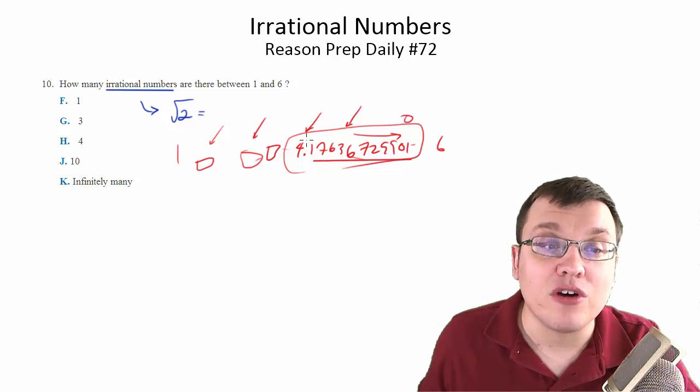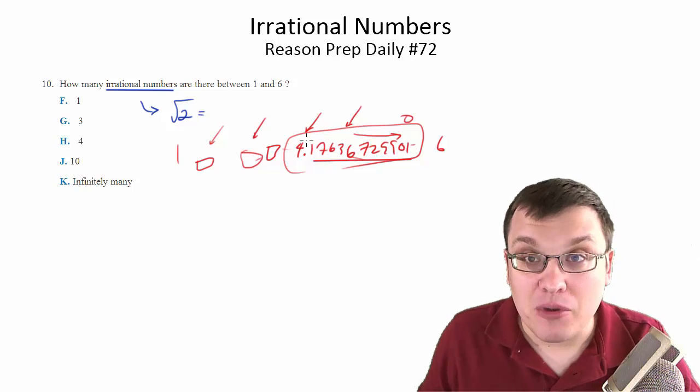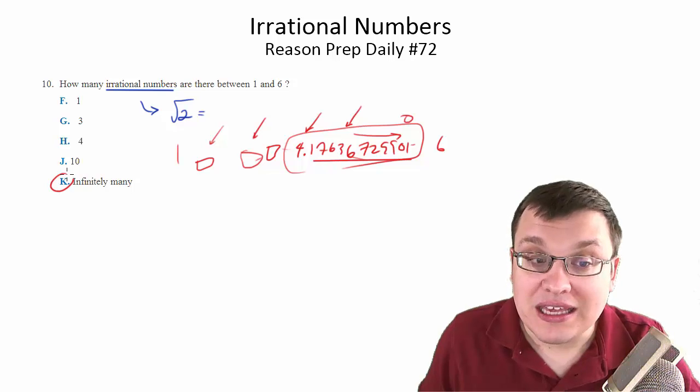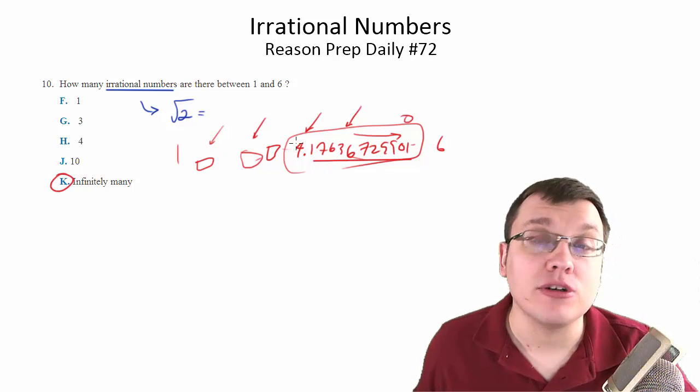In fact, there's an infinite number of irrational numbers between really any numbers, any real numbers. So for that reason, I'm going to go with K as my answer because I can pick an arbitrary number of numbers.